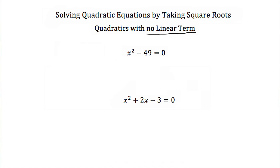I would use square roots to solve x squared minus 49 is equal to 0, but I would not use it to solve x squared plus 2x minus 3 is equal to 0, because this has a linear term in it — this 2x — which makes it hard to use square roots to solve for x.